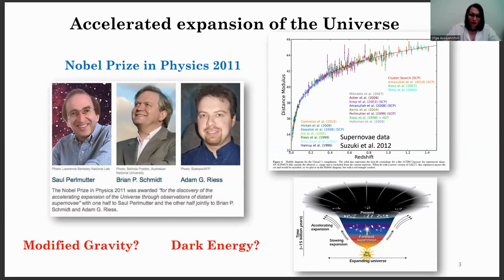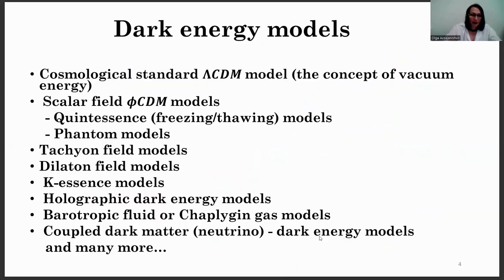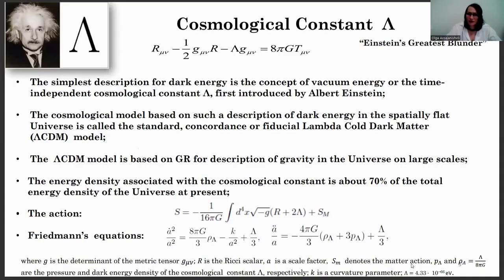There are two opposite approaches for the explanation of this phenomenon: the modification of general theory of relativity on large scales, and the existence of dark energy or dark barotropic fluid with negative pressure. There are numerous dark energy models. The simplest description for dark energy is the concept of vacuum energy, or the time-independent cosmological constant lambda, first introduced by Albert Einstein.